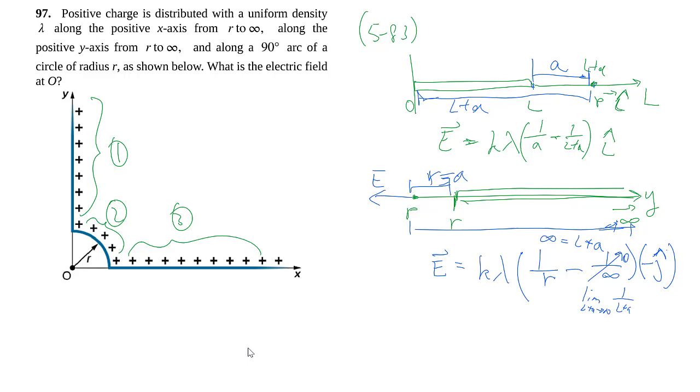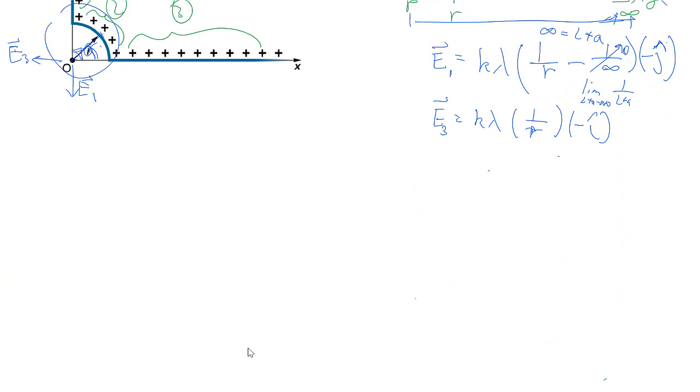Very similarly, we can just kind of slap this as an x, and call E3 to be kλ over r, and then a negative i instead of negative j. So let's sketch those in. We've got E3 in the negative i direction, E1 in the negative j direction, and then what we have left is region 2. So we've got, based on the hard work we've done before, very quickly 2 thirds of the problem, without doing any integration whatsoever.